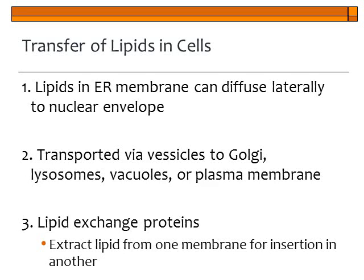The third transfer method is called a lipid exchange protein. A protein grabs the phospholipid that was just made, carries it, and inserts it into another membrane — transferring one phospholipid at a time. In contrast, if you use the vesicle method, a lot of lipids are transferred at once because you need enough to make up that entire vesicle.